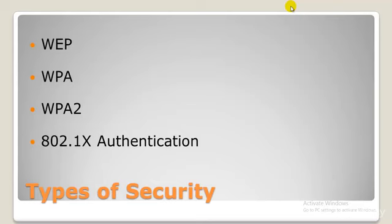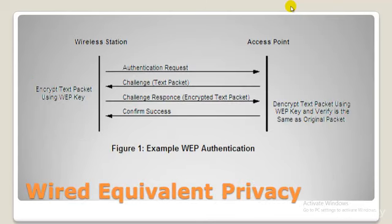This is what WEP looks like. WEP — the full form is Wired Equivalent Privacy. WEP is the most widely used Wi-Fi security algorithm in the world, which is a function of age, backwards compatibility, and the fact that it appears first in the encryption type selection menus in many router control panels. WEP was ratified as a Wi-Fi security standard in September 1999.